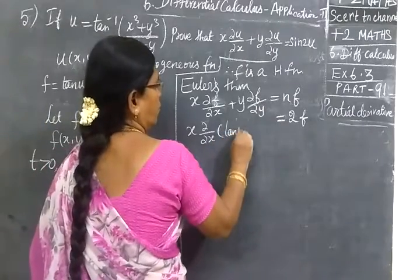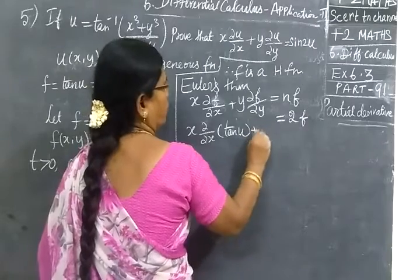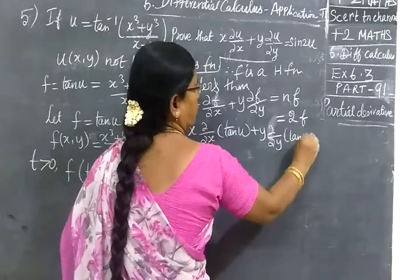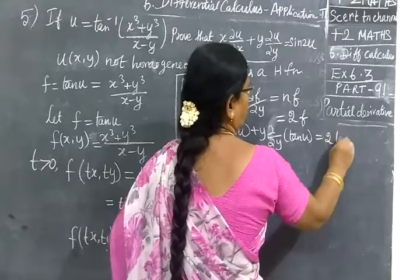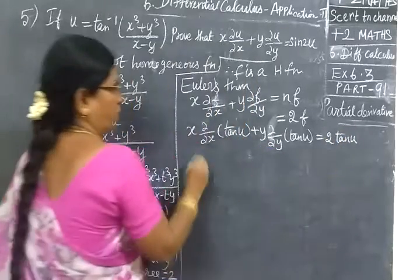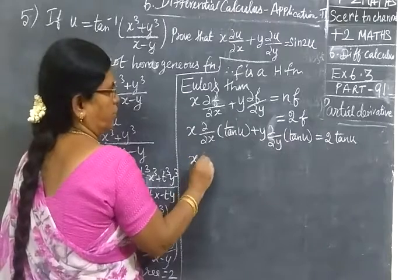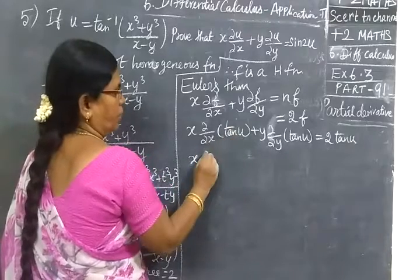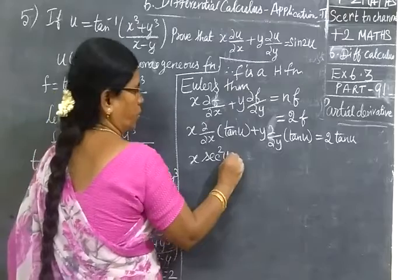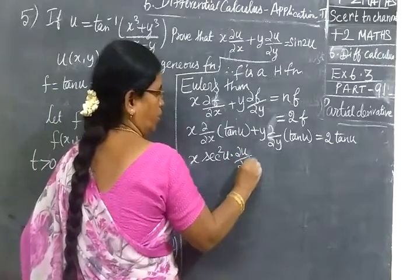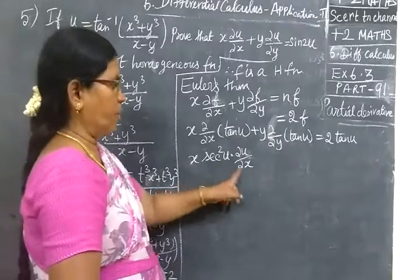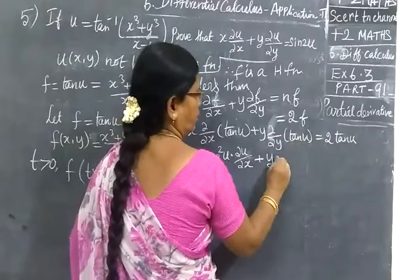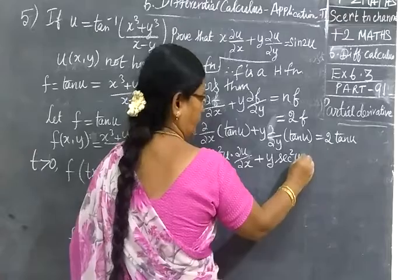Euler's theorem, F equal to tan U. Then Y into partial by partial Y of tan U equal to 2 tan U. X into tan U is differentiation in sequence by U into partial U by partial X. Because U is a function. With respect to X we are doing it. So this times partial U by partial X plus Y into tan U by partial Y, sequence by U.